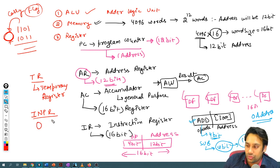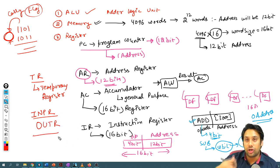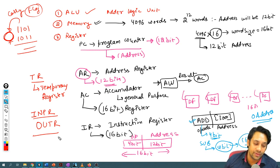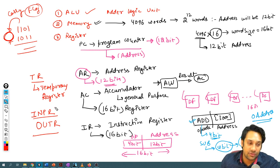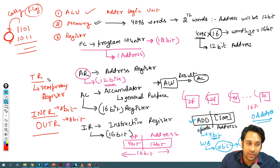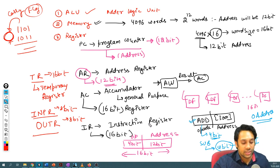We also have OUTR — the output register. Whatever output you want to show to the user will be stored in the output register. The input register is 8 bits, the output register is also 8 bits, and the temporary register is 16 bits.